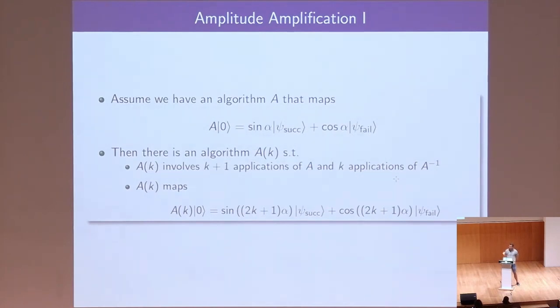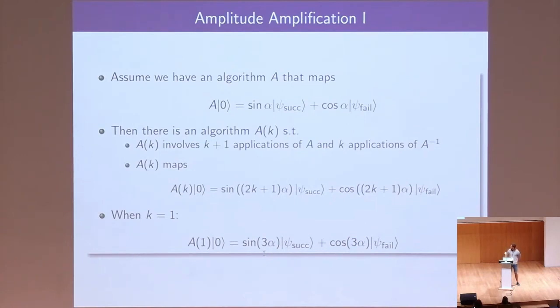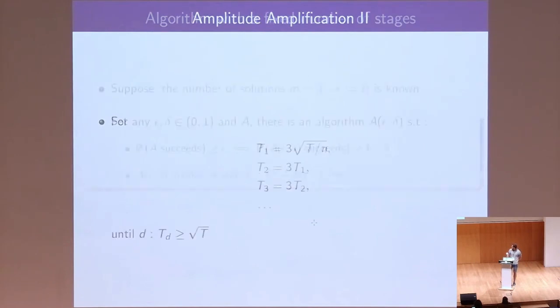Amplitude amplification allows to multiply this angle by an odd factor, and it does so by invoking this initial unitary as many times. And if we knew alpha, then we could choose k large enough to make this angle close to pi over 2, much like in Grover's search. But actually, in our applications, we do not need that. We use this merely to triple the angle. And the other form of amplitude amplification, perhaps more widely used, is this. Suppose we do not know this angle alpha, but we have some guarantees, some lower bound on the success probability of the initial algorithm. Then we can boost this success probability to an arbitrary threshold 1 minus delta by invoking the initial algorithm this many times.